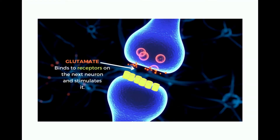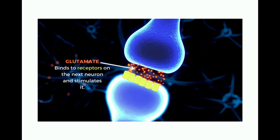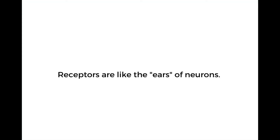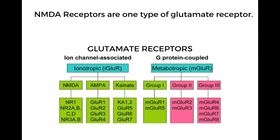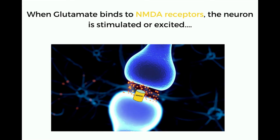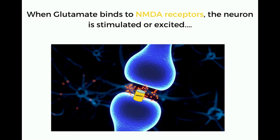Glutamate binds to receptors on the next neuron and stimulates it. Receptors are like the ears of neurons. There are a number of different glutamate receptors. NMDA and AMPA receptors are just two types. When glutamate binds to NMDA receptors, the neuron is stimulated or excited.